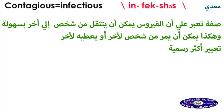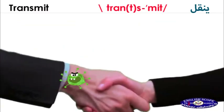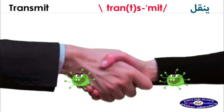Contagious is an adjective to express that the virus can move easily from one person to another — so it can be passed from one to another. A more formal way to say 'pass' or 'give' is transmit. For example, you shouldn't shake hands.